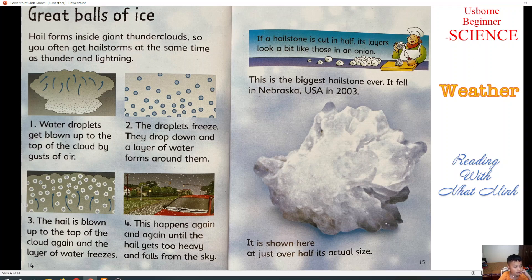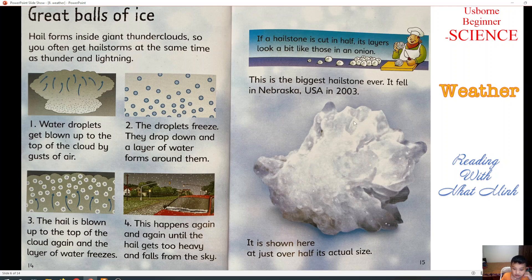First, water droplets get blown up to the top of clouds by gusts of air. The droplets freeze, then drop down. A layer of water forms around them. The hail is blown up to the top of the clouds again and the layer of water freezes. This happens again and again until the hail gets too heavy and falls from the sky. If a hailstone is cut in half, its layers look a bit like an onion.